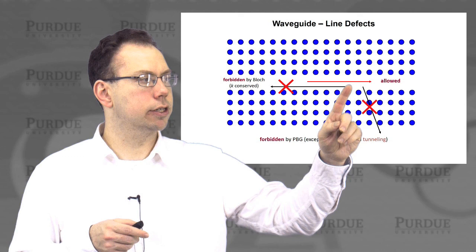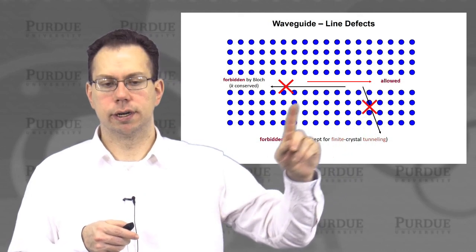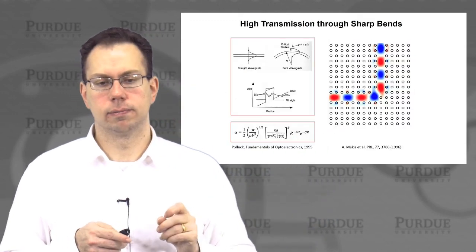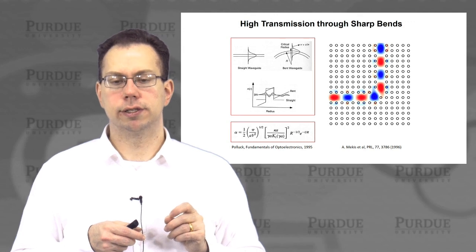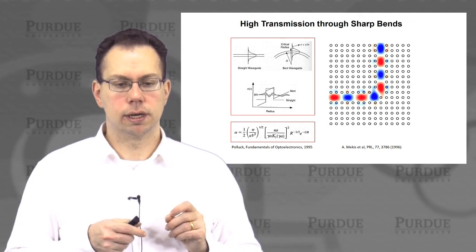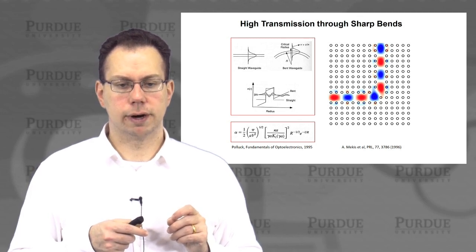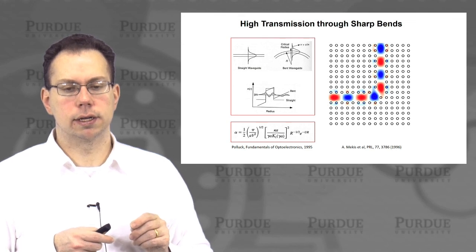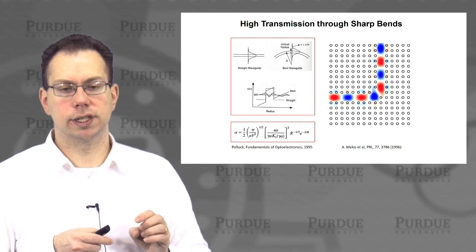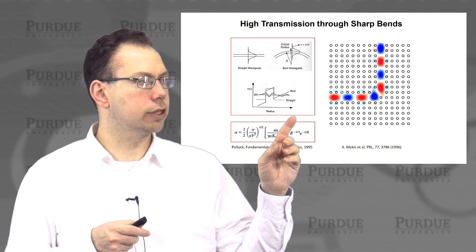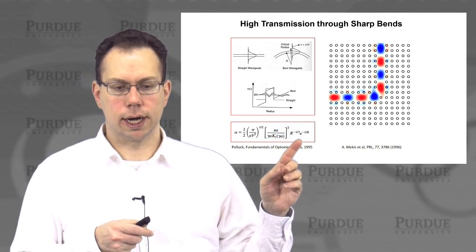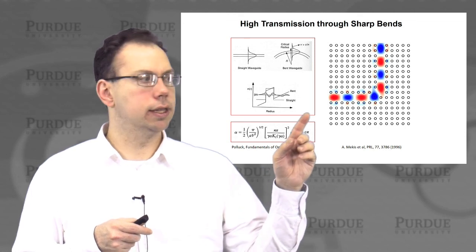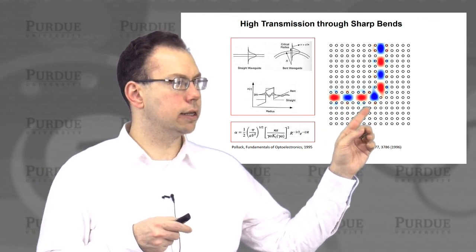Backscattering is actually blocked by momentum conservation, which prevents light traveling in one direction from going back the opposite way. This means you can introduce sharp bends. There is theory showing that if you can strongly confine light — or really any wave — in a sharply bent structure, you can find resonant frequencies where transmission can still be very high. This is associated with a resonance between the incoming light into the curve and the resonance itself.